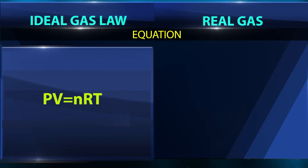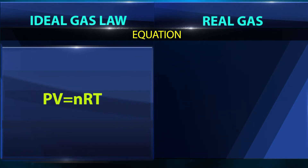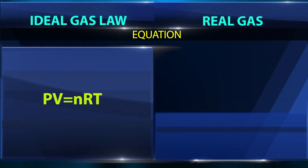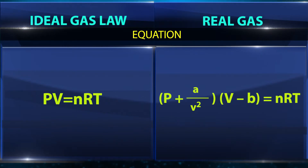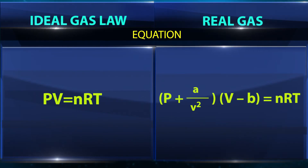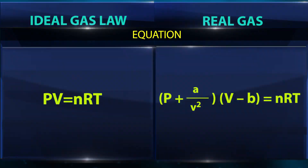Equation — ideal gas law: PV = nRT. Equation for real gas (Van der Waals): (P + a/V²)(V − b) = nRT.